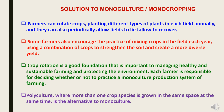Solutions and alternatives to monoculture and monocropping: Farmers can rotate crops by planting different types of plants in each field annually, and can periodically allow fields to lie fallow to recover — improving the health status of fields. Some farmers also encourage mixing crops in the fields each year, using a combination of crops to strengthen the soil and create a more diverse yield. Crop rotation is an important foundation for managing healthy and sustainable farming and protecting the environment. Polyculture — where more than one crop or species is grown on the same piece of land at the same time — is the primary alternative to monoculture.